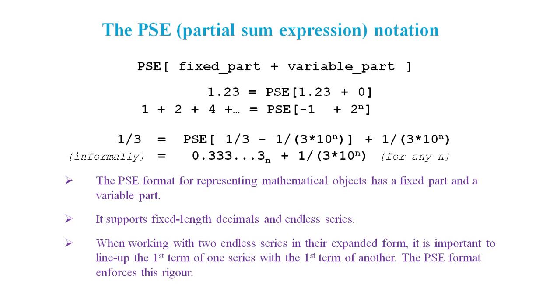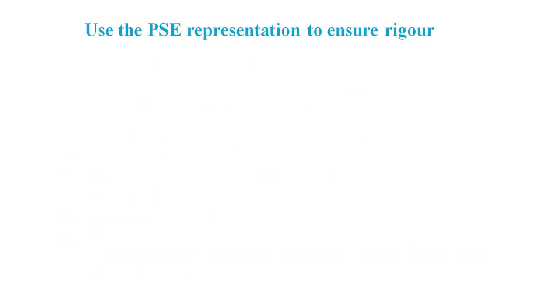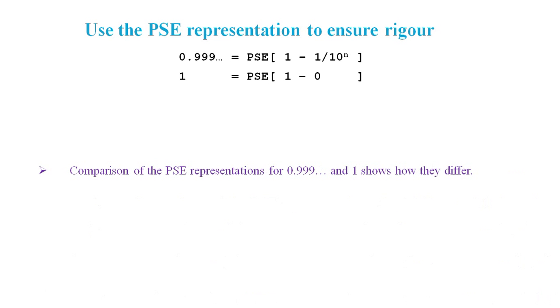Here we've used the PSE in an equation to show what 1/3 actually equates to. And 1/3 equates to PSE[0.333... + 1/(3×10^n)]. Informally, this could be stated as 0.3 recurring to the nth term plus 1/(3×10^n) for any n. And so we can use this PSE representation to ensure mathematical rigour. Here we've got 0.9 recurring and 1 in PSE format. By simply comparing the PSE representations for 0.9 recurring and 1, we can see that they are different.